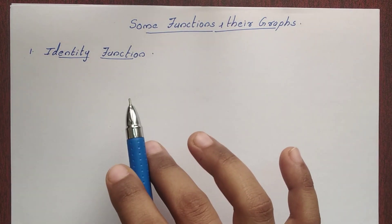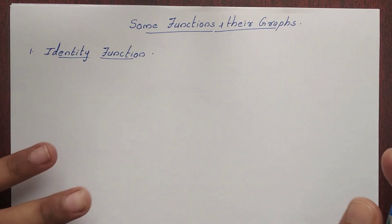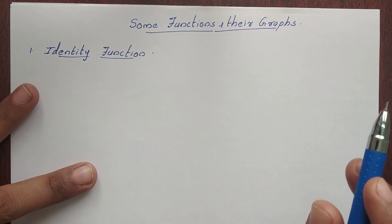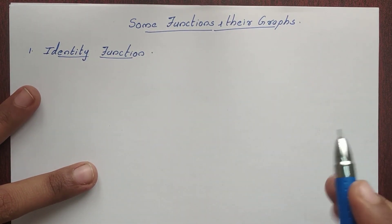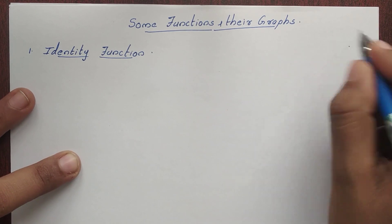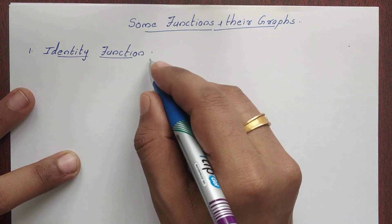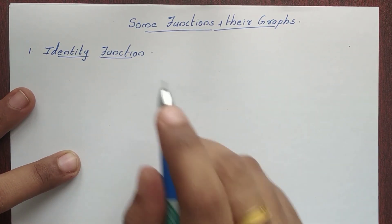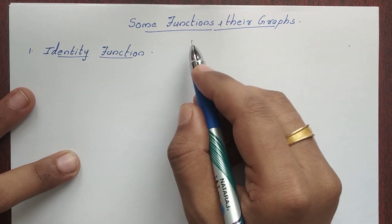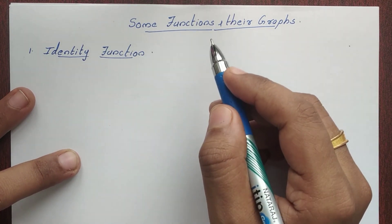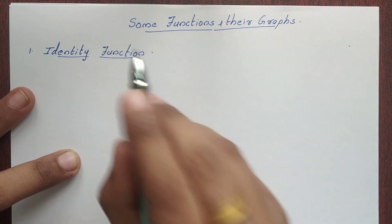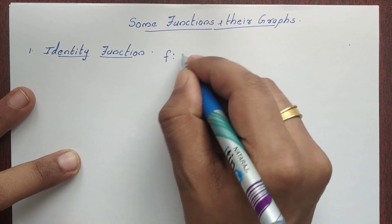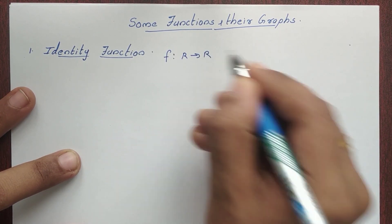The first function is the identity function. It doesn't mean identical — so what is it? This function is defined from R to R.